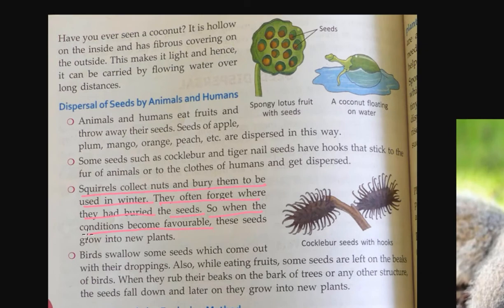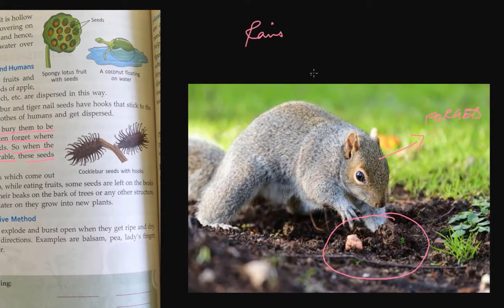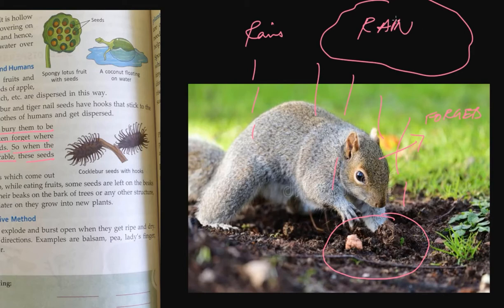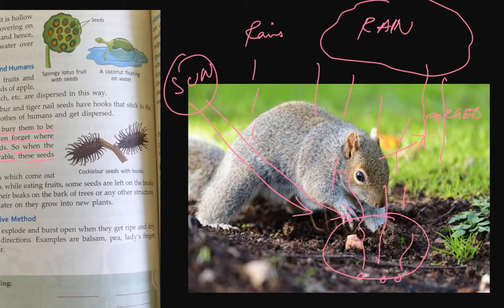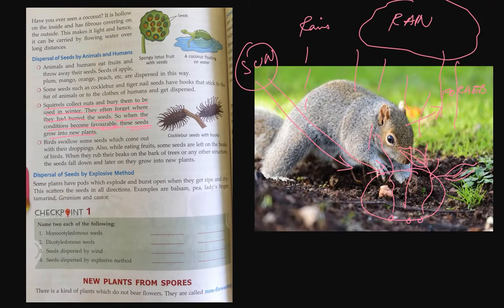When the conditions become favorable — when rain comes, sunlight comes — these seeds start growing into new plants. Favorable conditions means when there is water and sunlight, everything will grow. So the squirrel animal also helps in dispersal of seeds.